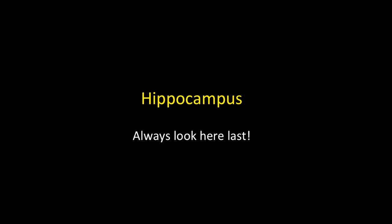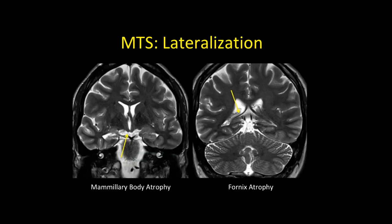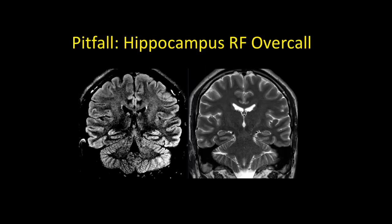Finally, the hippocampus — always look here last, save the best for last. The most common finding is mesial temporal sclerosis, which requires three findings: volume loss, T2/FLAIR hyperintensity, and architectural distortion. You need all three to call MTS. Remember that approximately 10% of cases have bilateral pathology. A helpful trick is to look at secondary signs: the output of the hippocampus through the fornix to the mammillary body. In this patient with right MTS, the right mammillary body and right fornix are atrophied.